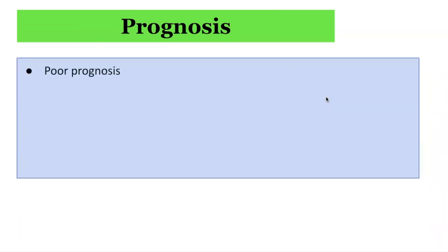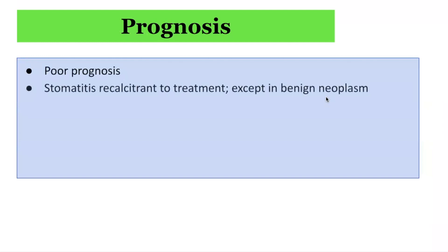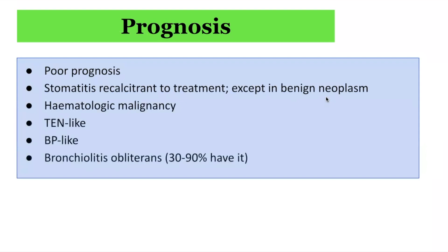In terms of the prognosis for paraneoplastic pemphigus, it is generally considered poor. Stomatitis is often recalcitrant to treatment, except in instances where the underlying issue is a benign neoplasm. Haematological malignancies are common. A TEN-like presentation or bullous pemphigus-like presentation may occur, and one of the main complications includes bronchiolitis obliterans, which affects the lung, and 30–90% of patients have been reported to have this.